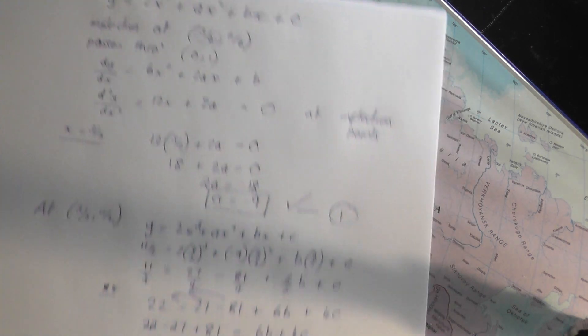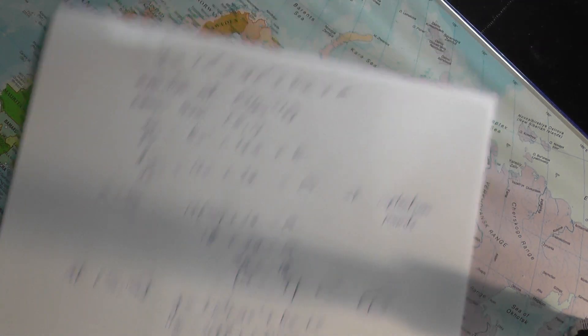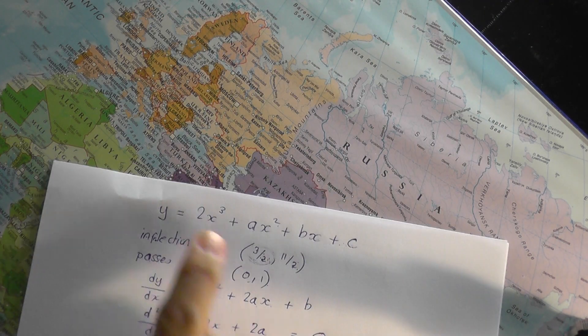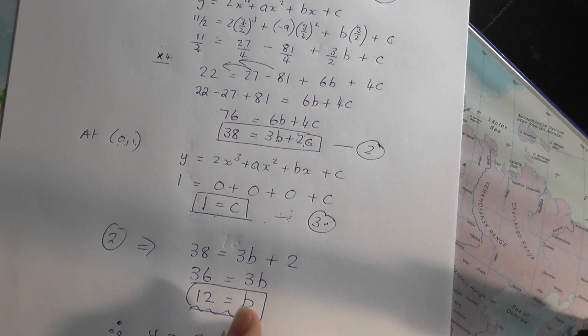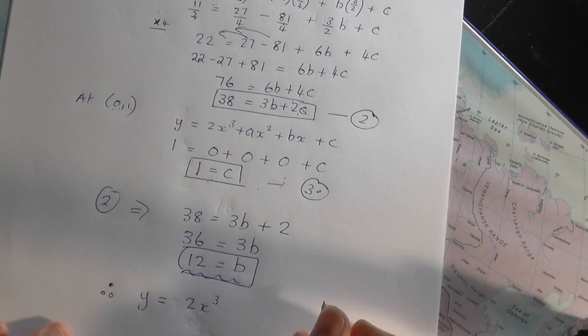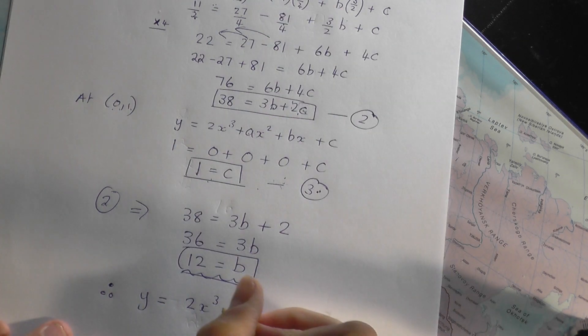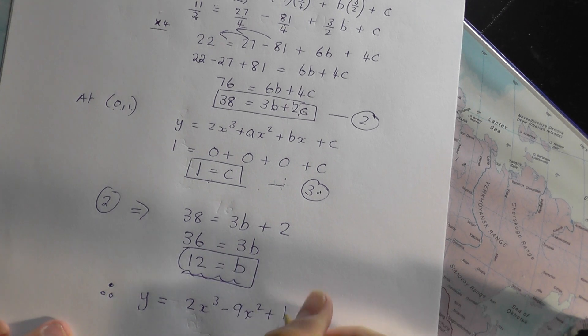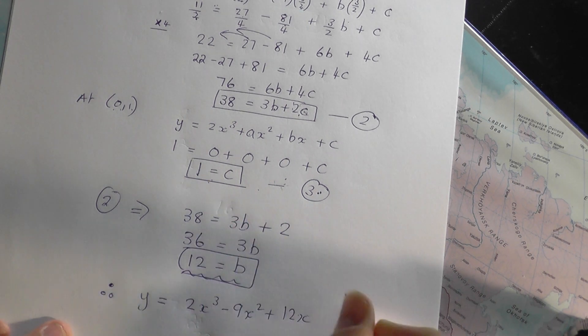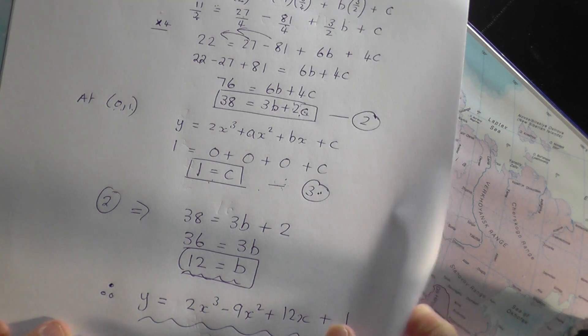And so the original curve, which had the equation, which was that, if you were asked to write it down, the original curve would be y equals, well, it began 2x cubed. I knew that. So I can write that as y equals 2x cubed. And then it was plus ax squared. Well, a was minus 9. So you had minus 9x squared. Plus bx's. So you had plus b is 12, 12x. And then plus c plus 1 on the end. And there is the starting equation of the curve.